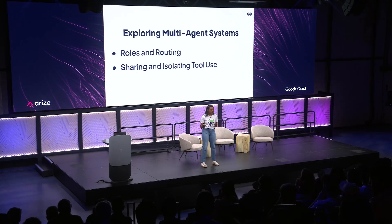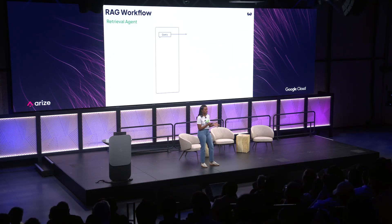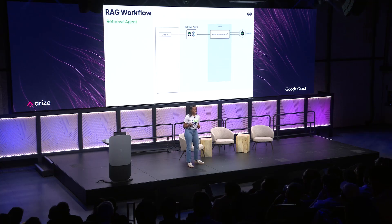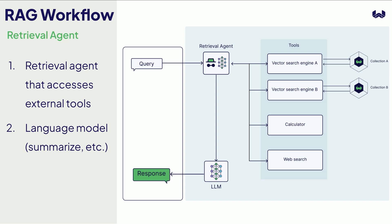Now I want to talk about multi-agent systems and how we can incorporate roles, routing, and isolating different tools to agents. In a single-agent system, the query goes to the language model, which decides: should I access collection A, collection B, use a calculator for a math question, or go to the web for new information? Once all the information is gathered, it's sent to a final language model to produce the response. In summary: we have the retrieval agent that accesses external tools, and then a final language model to generate or summarize the answer sent to the user.